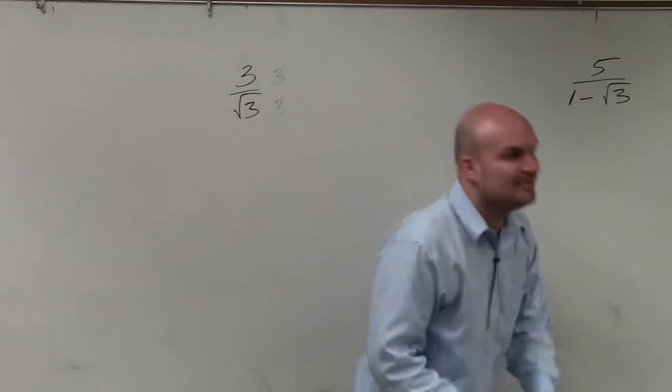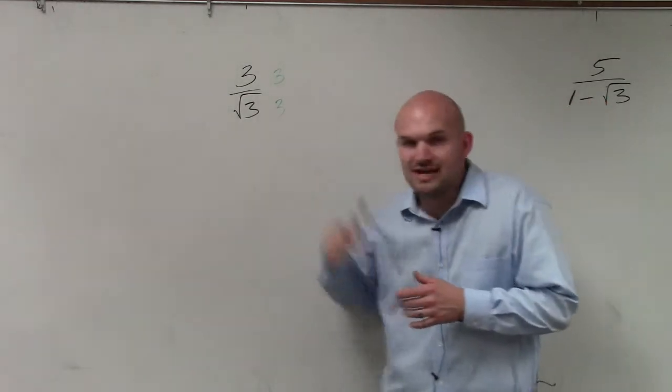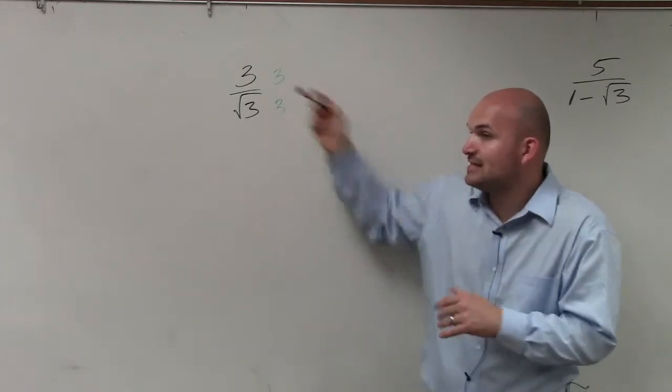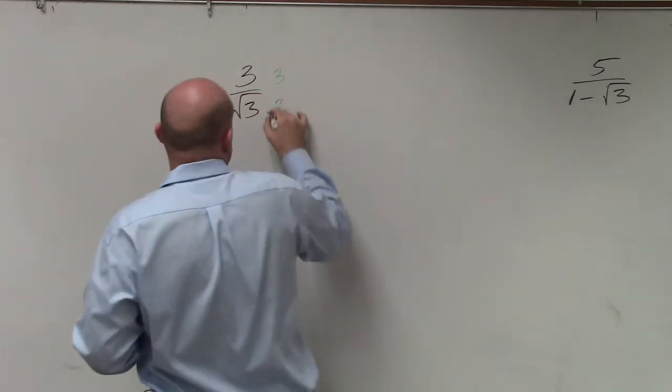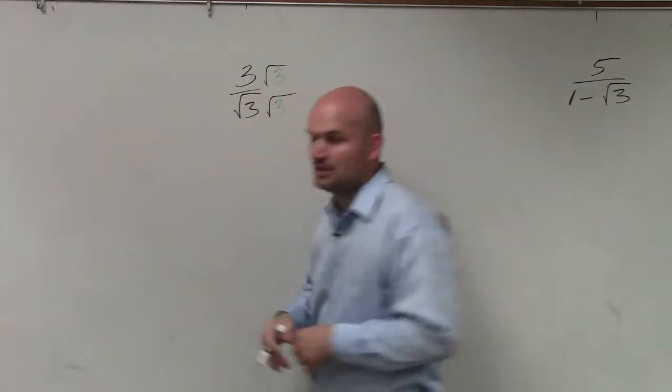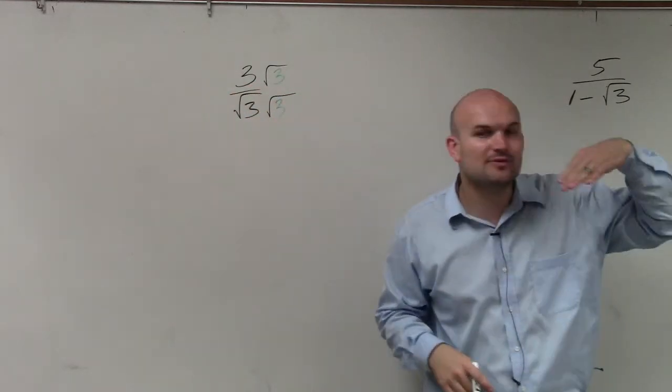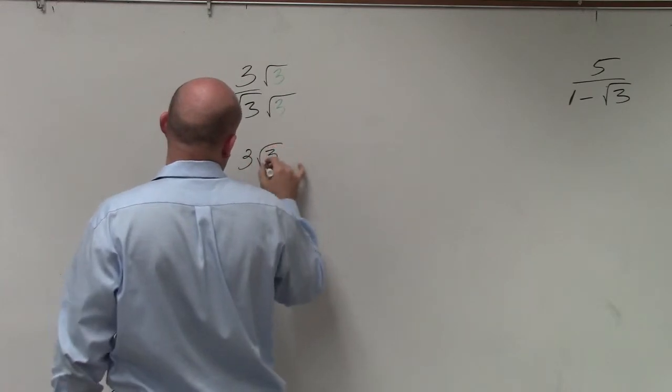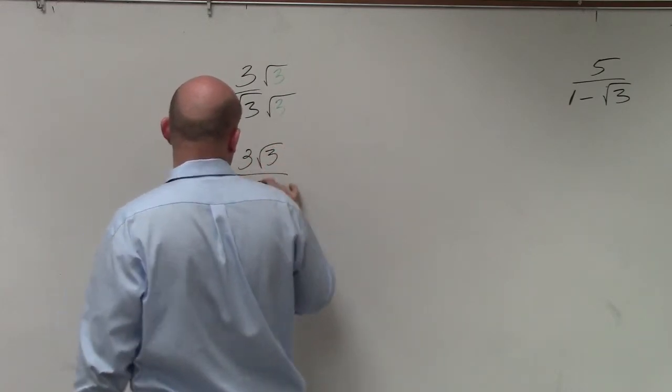But the problem is we can't multiply a number outside of a radical inside of a radical. So the only way to multiply 3 times 3 is to make this the square root of 3. So if I multiply by the square root of 3 in the numerator and denominator, I now obtain 3 square root of 3 over the square root of 9.